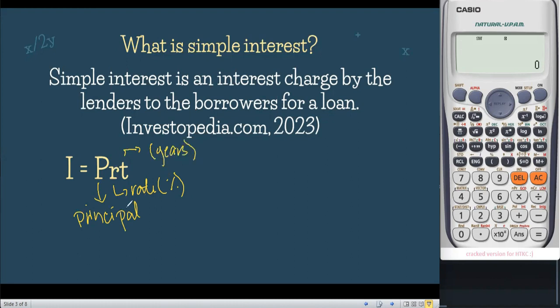But aside from that, we also have the formula for the future value, or ito yung maturity value. Ibig sabihin, ito yung hiniram plus yung interest na babayaran mo. We know that interest is equal to PRT.